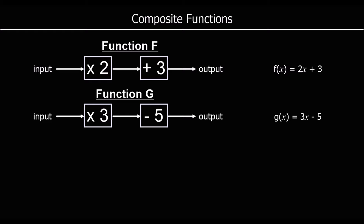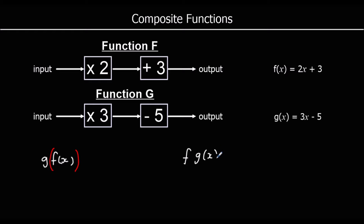With composite functions we are looking at what would happen if we ran these functions one after the other — so if we put something into f, got the output, and then put that into g, or if we did that the other way around, starting with g and then running f after it. We write this as: if we run f first, that's gf of x, and if we run g first, it's fg of x.